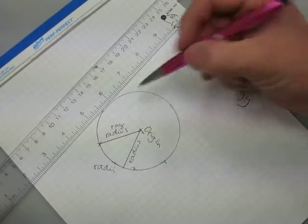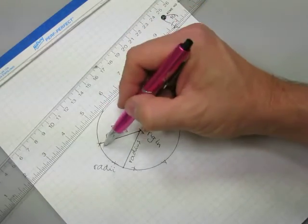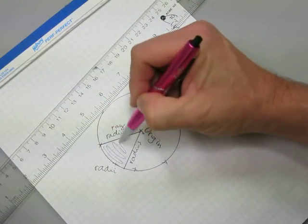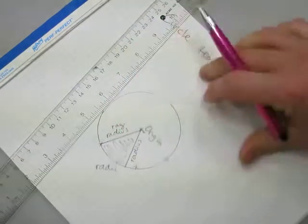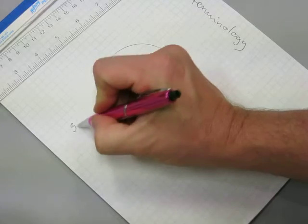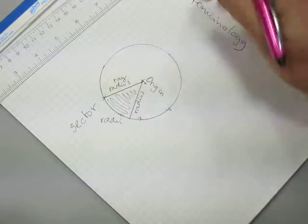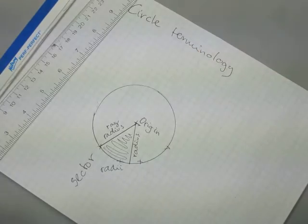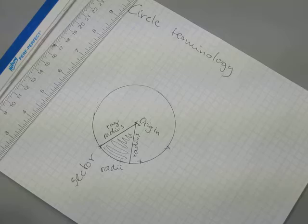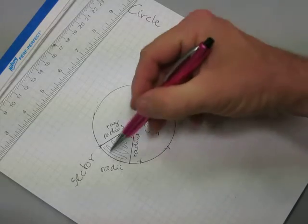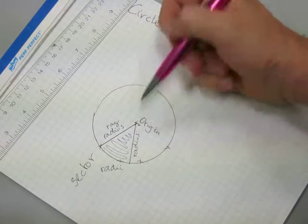This area here between these two radii is a sector — a circle sector. That's the area between these two radii here.